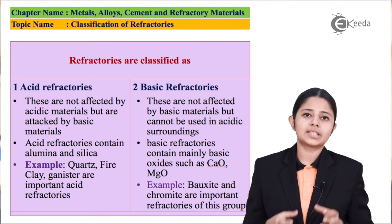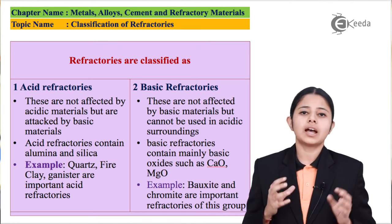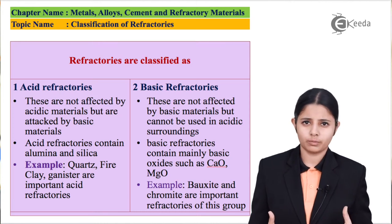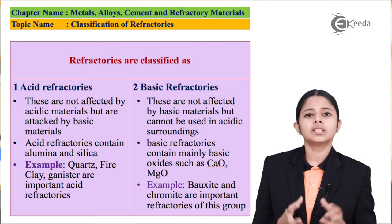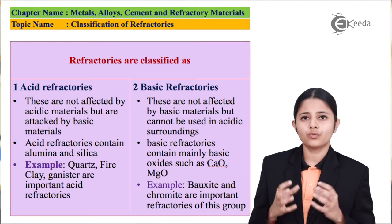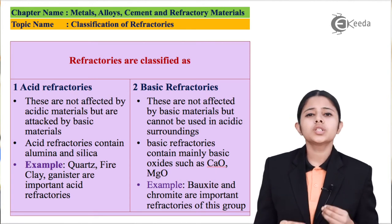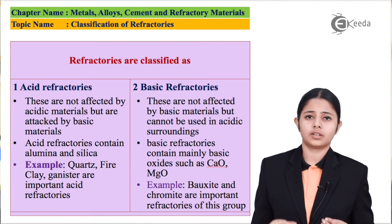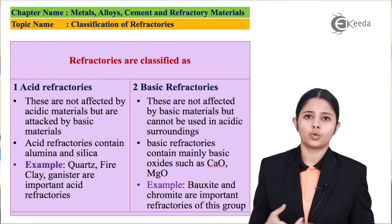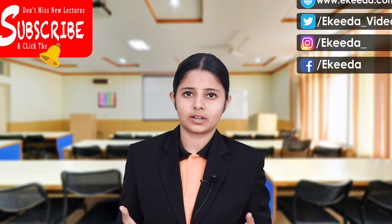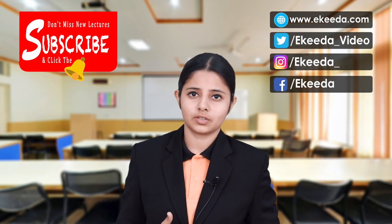The constituents of basic refractories are basic oxides — for example, calcium oxide or magnesium oxide. Both of these are the main basic oxides found in basic refractories. The two most important examples of basic refractories are bauxite and chromite. In this video we studied the classification of different refractories — the acidic and the basic refractories. Thank you so much for watching this video.